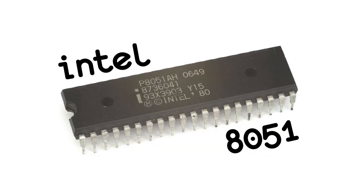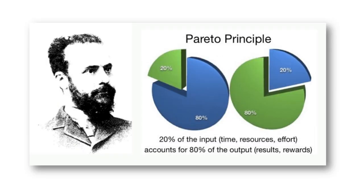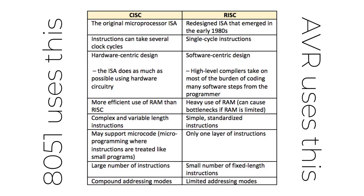Intel's MCS-51 family is based on CISC architecture. The formation of RISC architecture is a great example of the Pareto principle, or the 80-20 rule, which states that for many events, roughly 80% of the effect comes from 20% of the causes. In a microprocessor, about 80% of the instructions are generated but only 20% of the instruction set is executed. By simplifying the instructions, the performance of the processor can be increased drastically, which led to the formation of RISC — Reduced Instruction Set Computer.